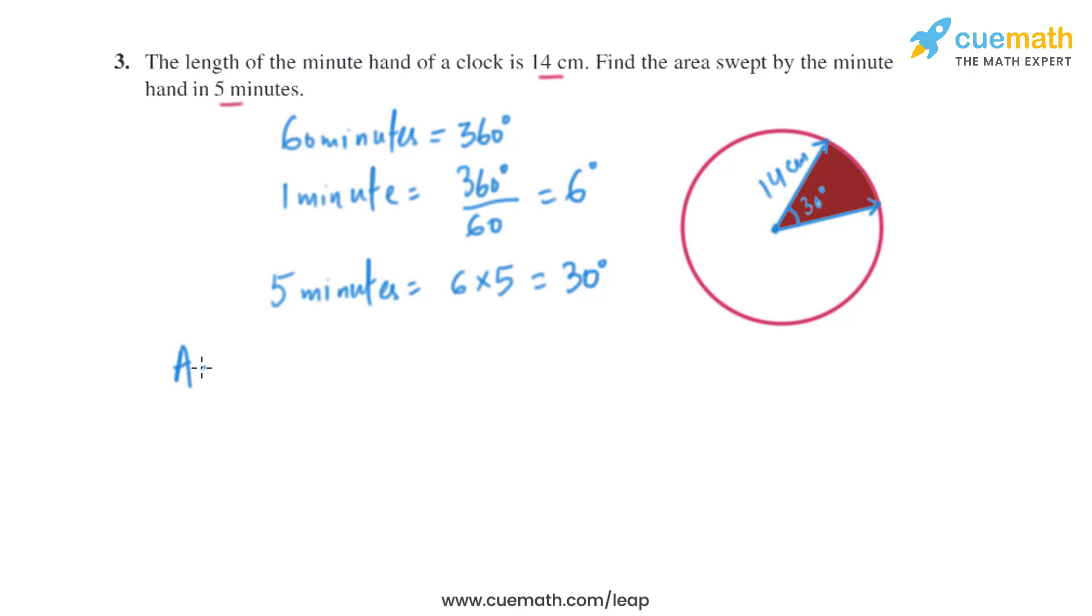We know the formula to find the area of the sector: that is theta divided by 360 degrees, multiplied by pi r squared. We know the value of theta, that is 30 degrees divided by 360 degrees, multiplied by pi, and the radius is given, that is 14 squared.